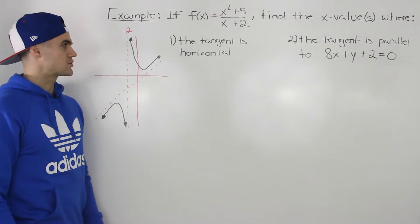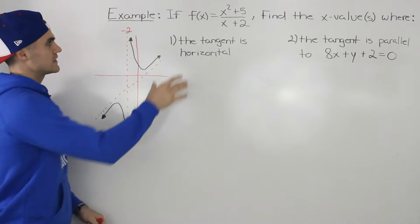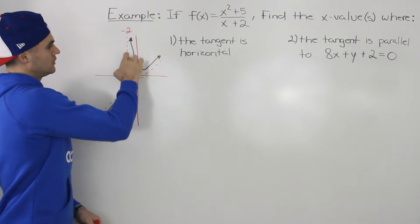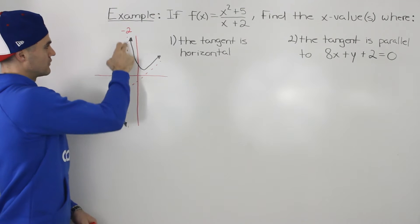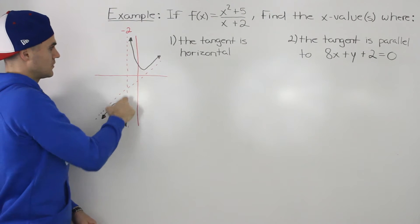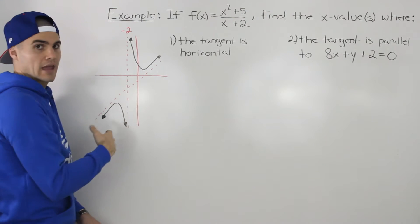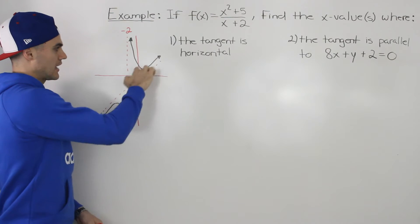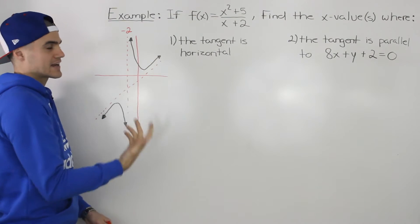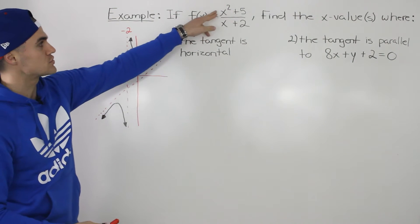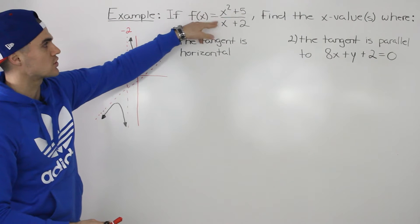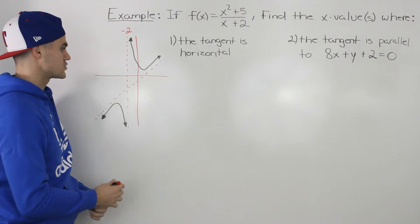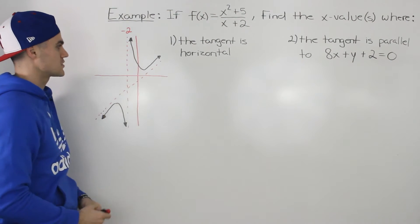Let's show visually what's going on. If I take this function and graph it, it's going to look like this. There's going to be a vertical asymptote at an x value of negative 2, and there's also going to be an oblique asymptote on the line y equals x minus 2. If you took those two terms and divided them, you would get a quotient of x minus 2, which represents the oblique asymptote.